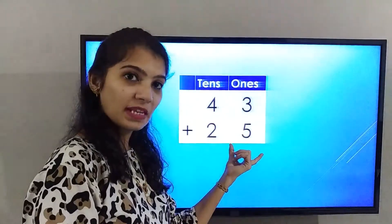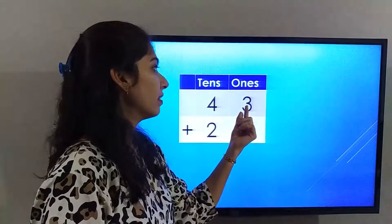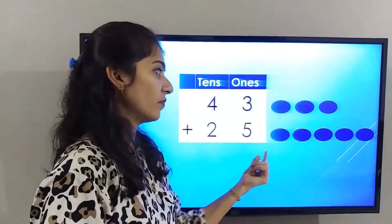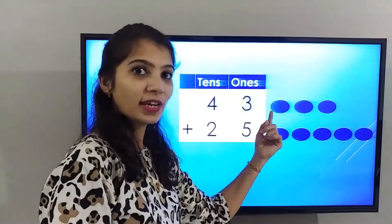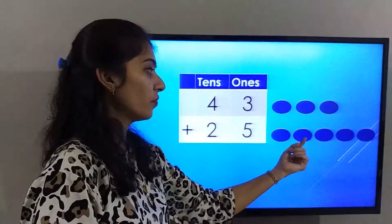need to solve the ones place first. So the number in the ones place is 3 plus 5. Let's count all the balls together. 1, 2, 3, 4, 5,